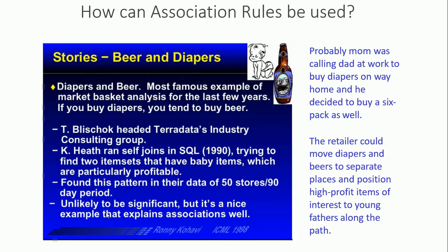Let's take a very famous example of how association rules can be used — the story of beer and diapers, one of the most famous examples of market basket analysis. If you buy a diaper, you tend to buy a beer. A consulting group using SQL tried to find two items — baby items which were particularly profitable — and found this pattern across 50 stores over 90 days. The story goes that mom called dad at work to buy diapers on the way home, and he decided to buy a six-pack as well. So the store placed diapers and beer near each other to position high-profit items.